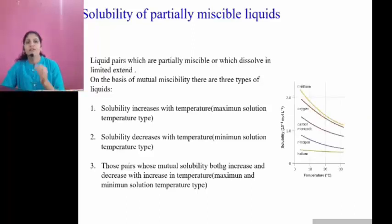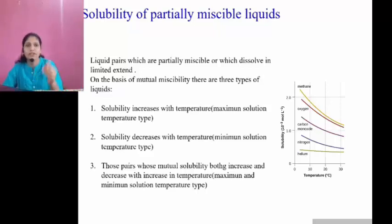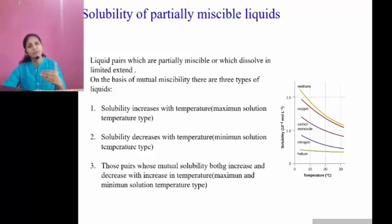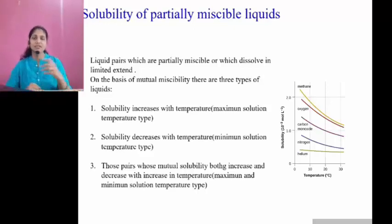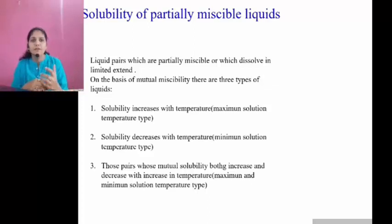In the second type, solubility decreases with temperature — that is minimum solution temperature — meaning at high temperature these solutions are soluble, but if we decrease the temperature these solutions become non-soluble. At room temperature the components are immiscible. In previous class, temperature increase meant solubility increase; in the second type, temperature increase means solubility decreases. The third type consists of pairs whose mutual solubility both increases and decreases with increase in temperature.